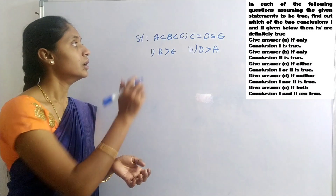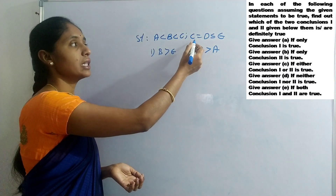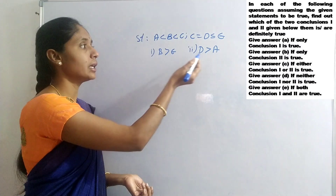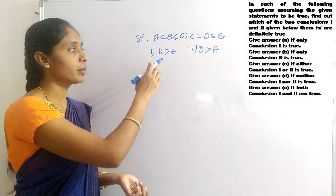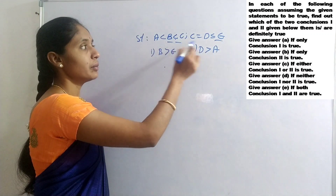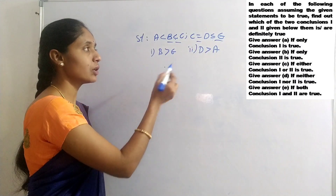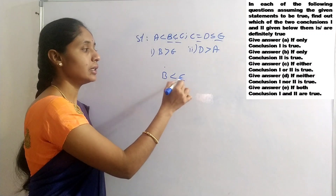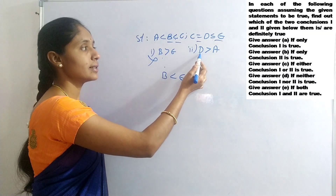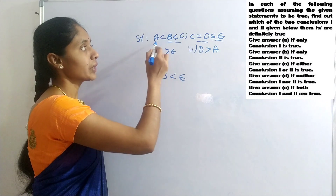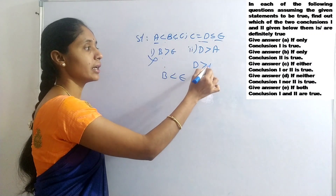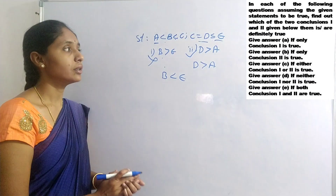Question 6: Statement 1: A less than B less than C. Statement 2: C equals to D less than or equals to E. Conclusions: B greater than E; D greater than A. For B and E, the signs are less than, equals to, less than or equals to — common symbol gives B less than E. But conclusion says B greater than E — wrong. For D and A: we can conclude A less than D, meaning D greater than A — conclusion 2 is true.